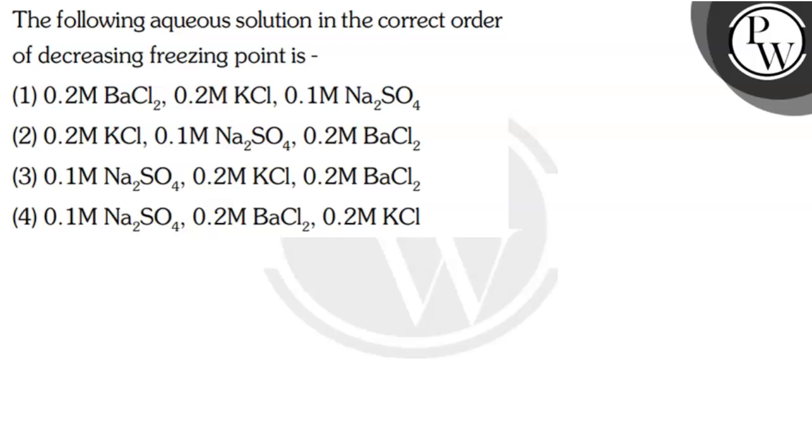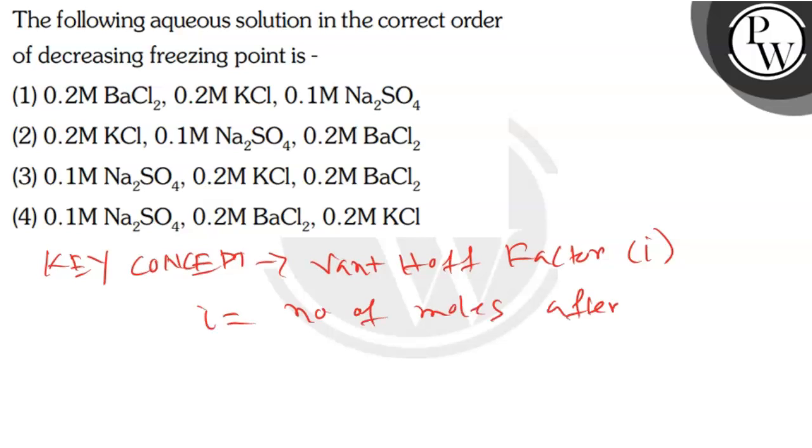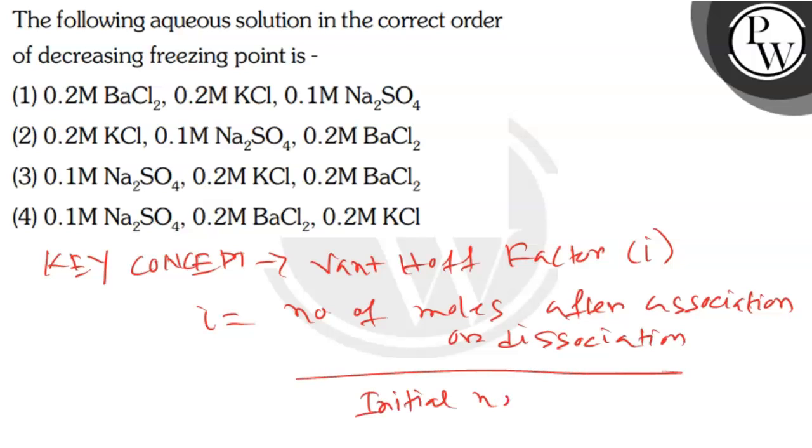What is the key concept here? The key concept here is the van't Hoff factor. i is equal to number of moles after association or dissociation divided by initial number of moles.